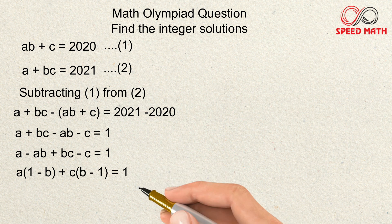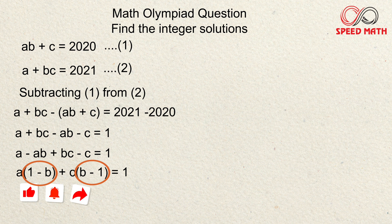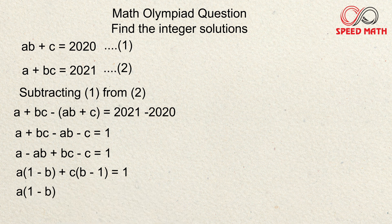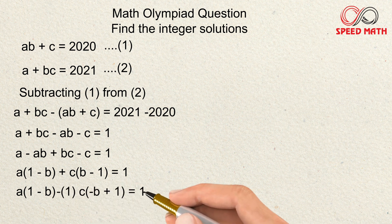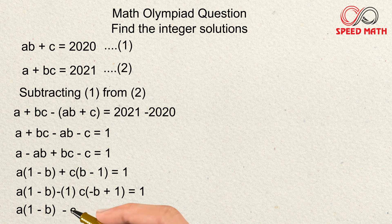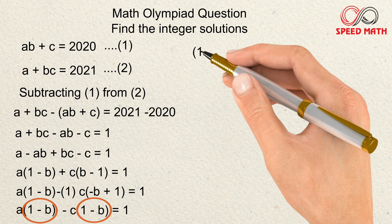The first bracket has (1 − b) and the second has (b − 1) — same terms but opposite signs. To make the signs the same so we can factor further, we take minus common from the second bracket: c(b − 1) becomes −c(1 − b). So minus b plus one can be written as (1 − b).